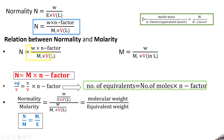Another relationship: normality equals gram equivalents divided by volume in liters; molarity equals moles divided by volume in liters times N factor. Cancelling volume, we get: number of gram equivalents equals number of moles times N factor. Gram equivalents and equivalents are the same; when expressed in grams, they are called gram equivalents.